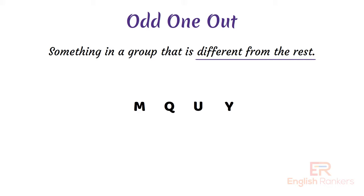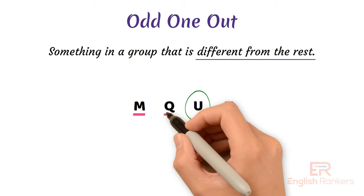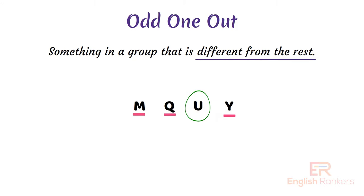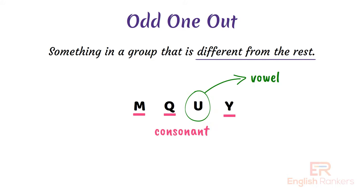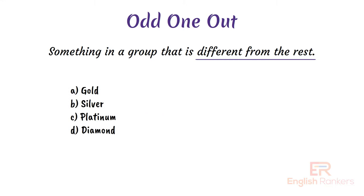Find the odd one out from the options: M, Q, U, Y. The answer is U. The reason is all M, Q, and Y are consonants, and only U is a vowel, so U is the odd one out.